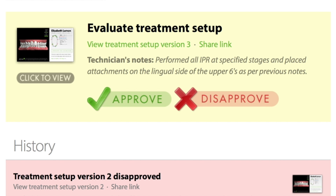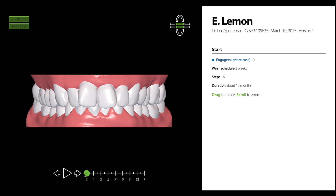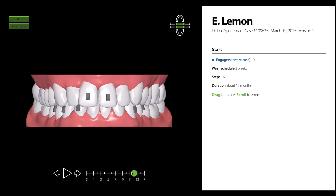To share the treatment setup with a patient or colleague, click Share Link. You'll be given a URL that you can copy and paste to share in an email or text message. Anyone who you give the URL to will be able to view the setup without needing a username or password. This shareable version of the setup redacts the patient's first name and hides the Evaluate button.